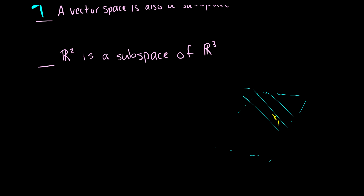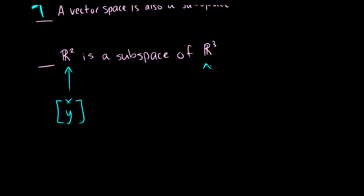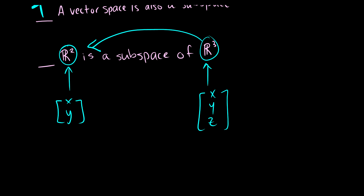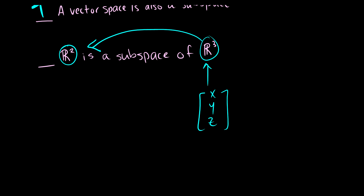Every vector in a subspace has to come from the vector space. So if we have a vector in R2, it has to come from R3. But from xyz you cannot get the vector (x, y); you can get (x, y, 0), but that's not in R2. So the answer is false.